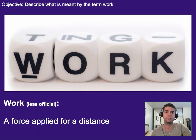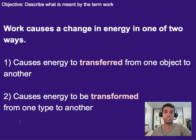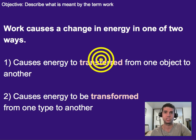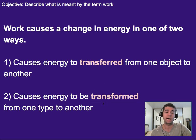A less official definition — although this is what the formula is based on — is it's a force applied for some distance. Both of those I'm not too happy with, so let's talk about what work does. Work causes a change in energy in basically one of two ways: it can cause a transfer of energy from one object to another, or it can cause a transformation of energy from one type to another.